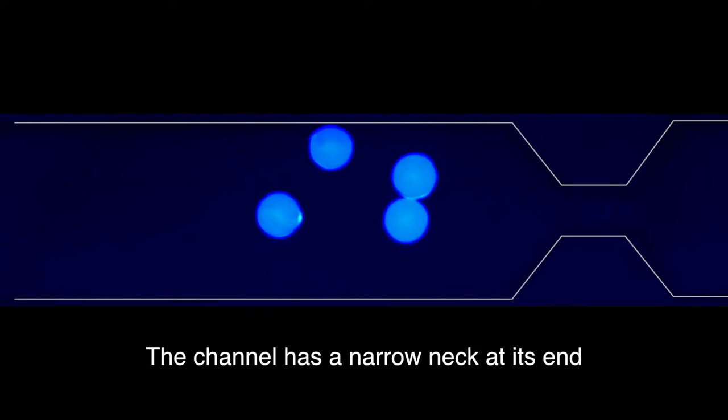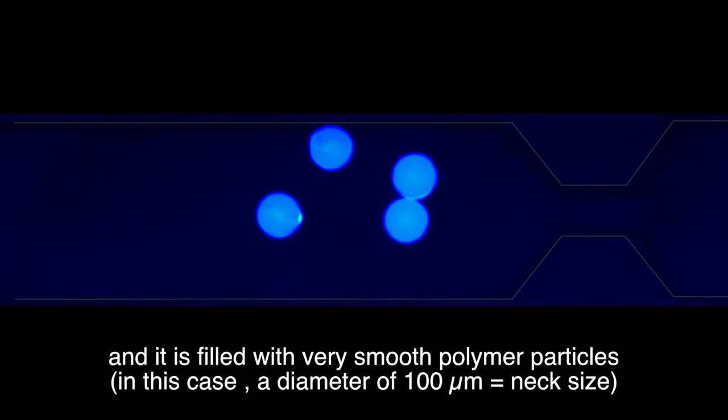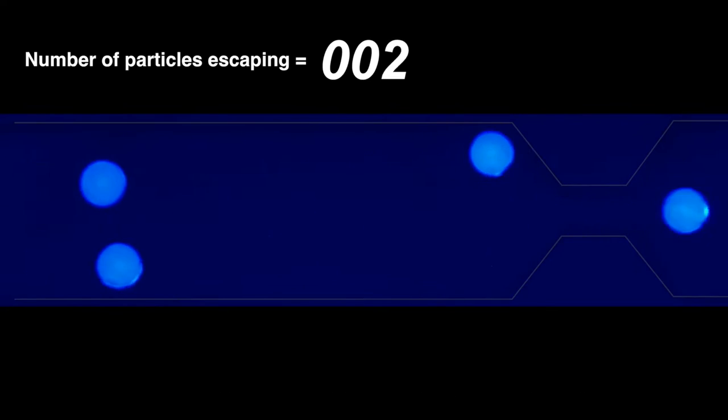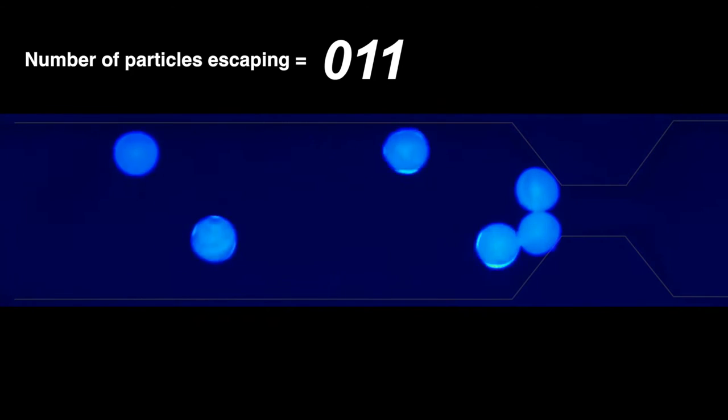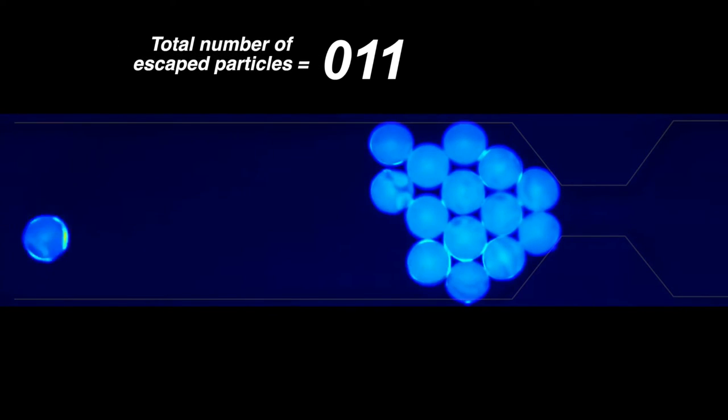So here's what we're going to do. We fill a microfluidic channel that has a narrow neck at its end with water and we add a few particles that actually don't stick to each other or to the walls. We push the liquid very slowly, dragging the particles along and we count how many particles escape before a clog occurs.